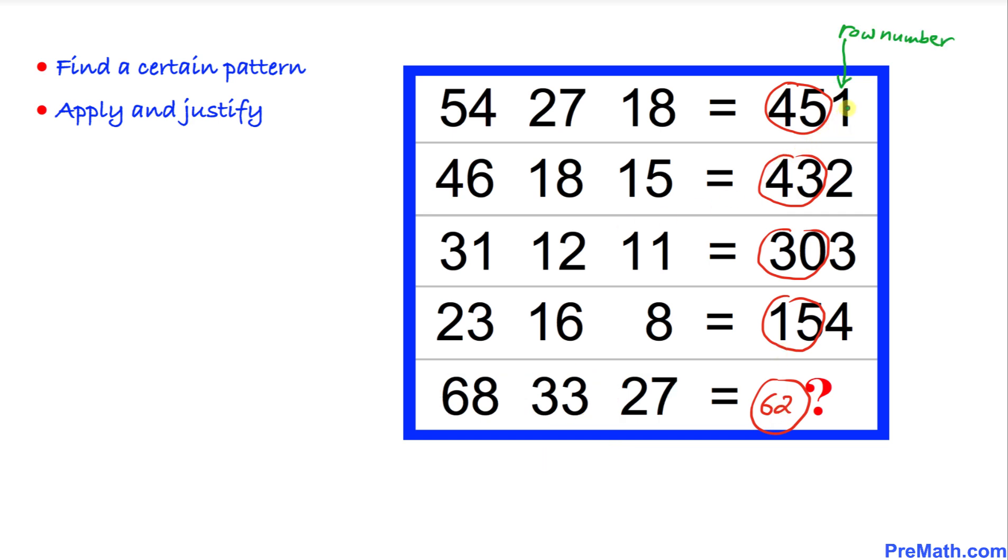Now let's focus on these last digits. As you can see, 1 represents the row number. One means the first row, two means the second row, three means the third row, four means the fourth row. So that means this number for the fifth row is going to be 5. Our complete answer is going to be simply 625.